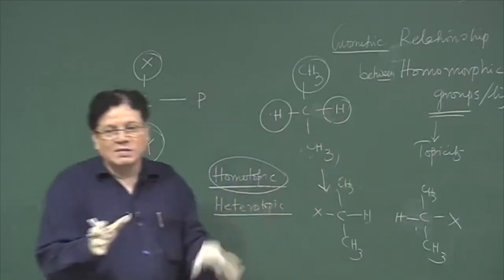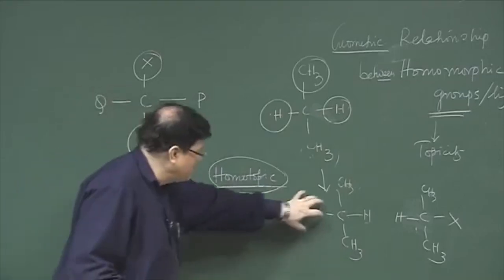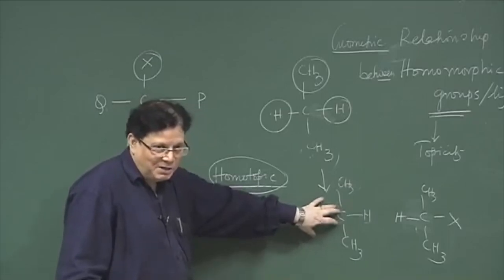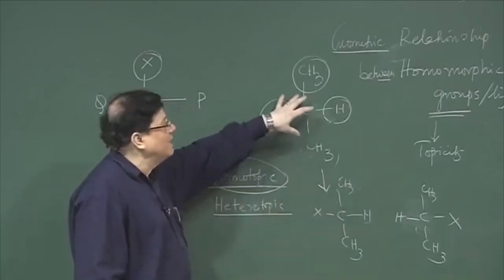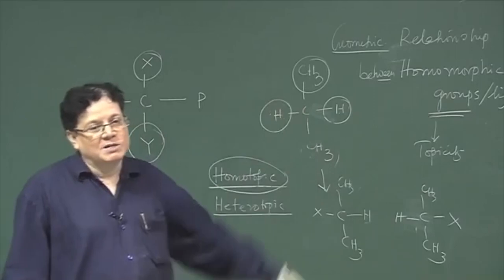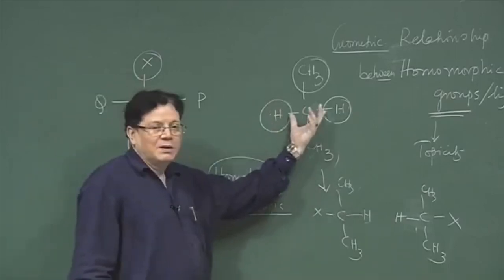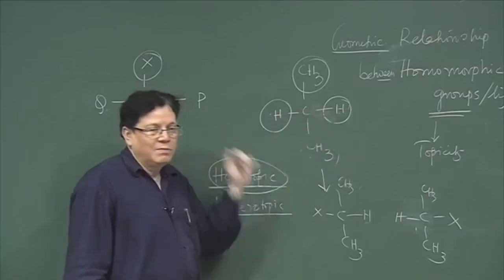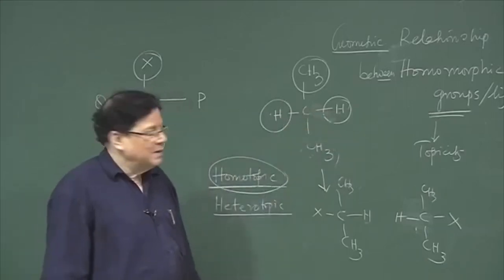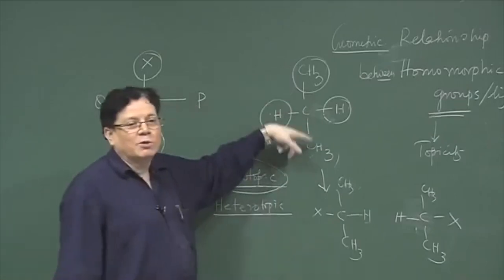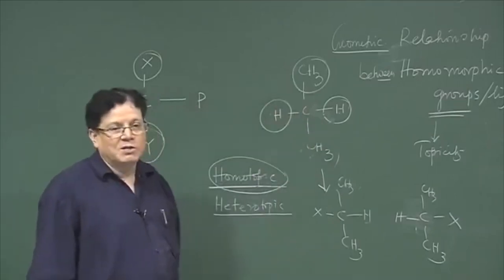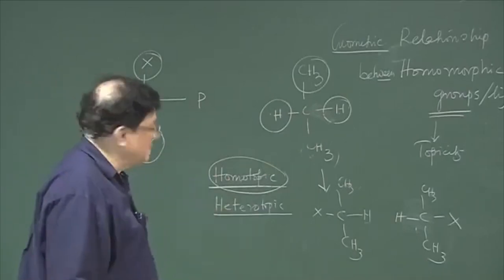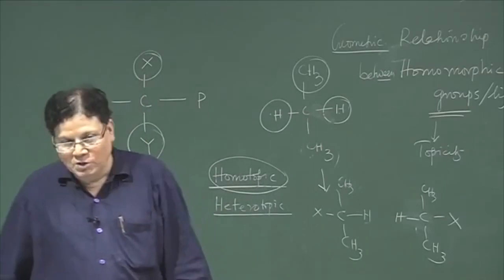This molecule has a C2 axis: if you put an axis here and rotate it by 180°, this hydrogen goes to the other position, the methyls swap but the molecule remains the same. So it has a C2 — a proper axis, a proper element of symmetry. If that is present, you can say that the ligands are homotopic. Similarly, you can show the two methyls are also homotopic.